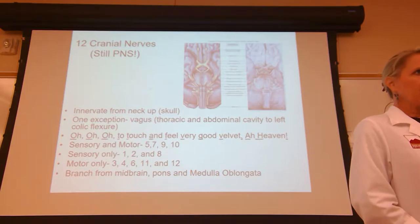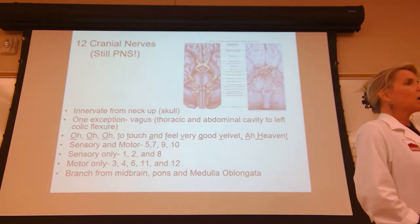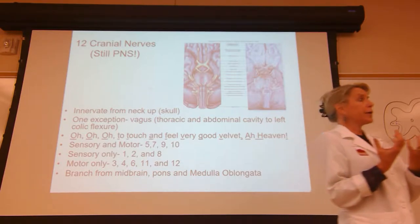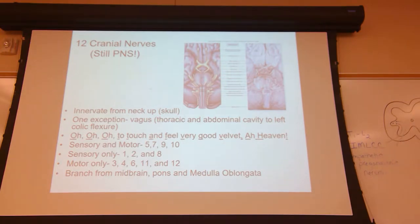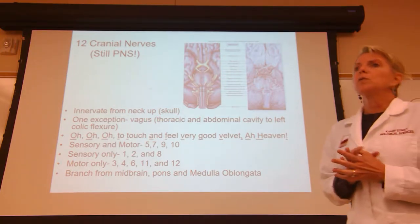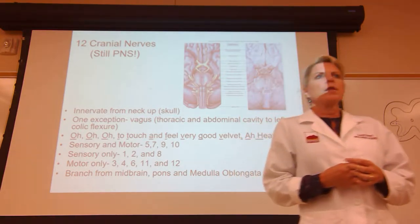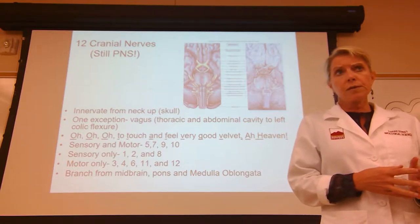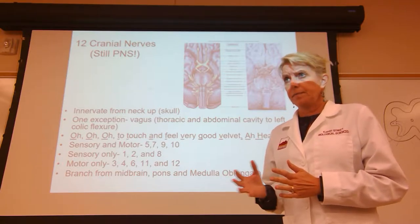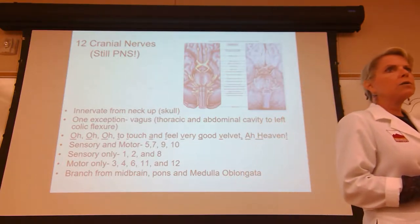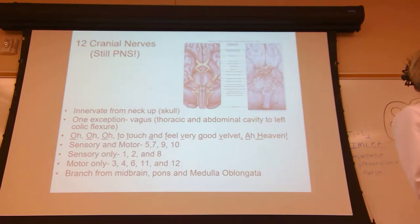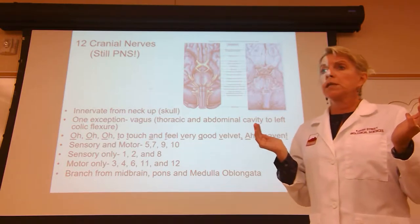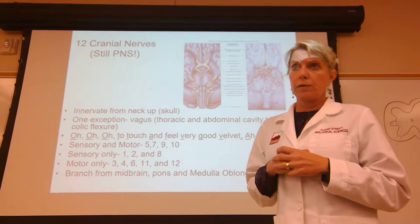We are starting to learn about the nervous system. The nervous system can be separated either according to structure — where you find it — or function — what does it do. The structural breakdown comes down to the central nervous system or peripheral nervous system. The central nervous system includes the brain and spinal cord. If you are half a millimeter outside of the brain or spinal cord, you are in the peripheral nervous system.